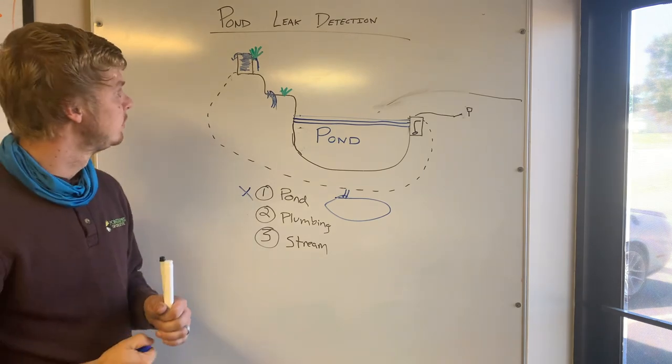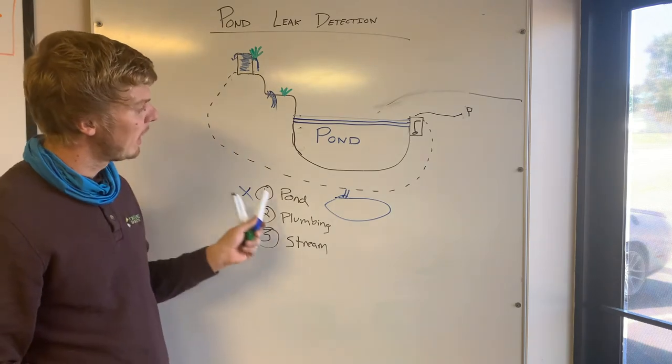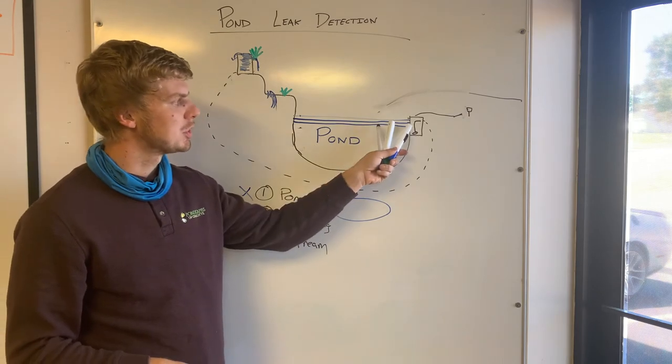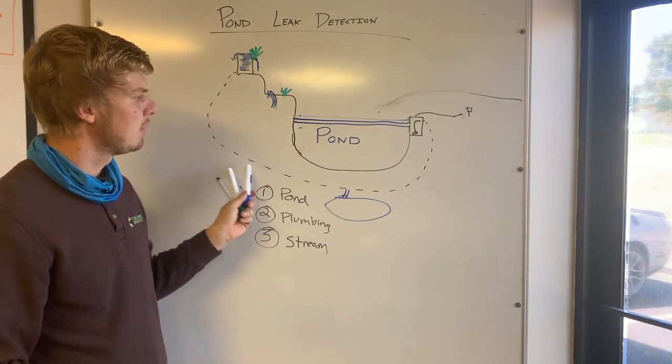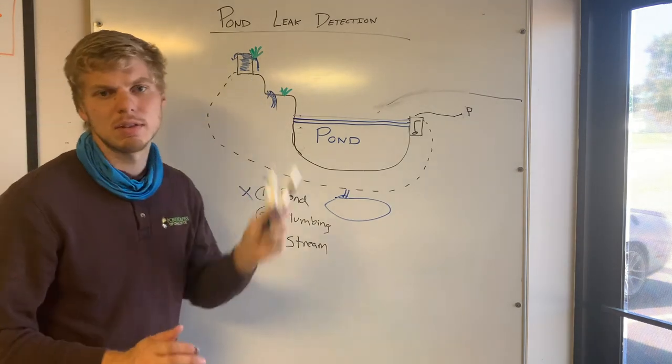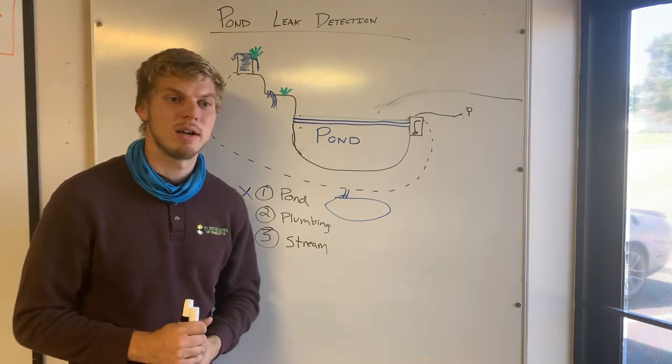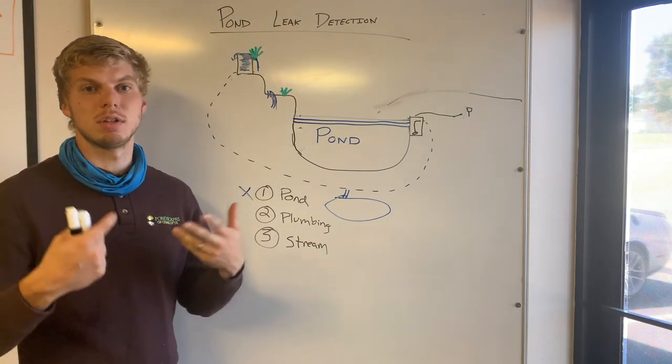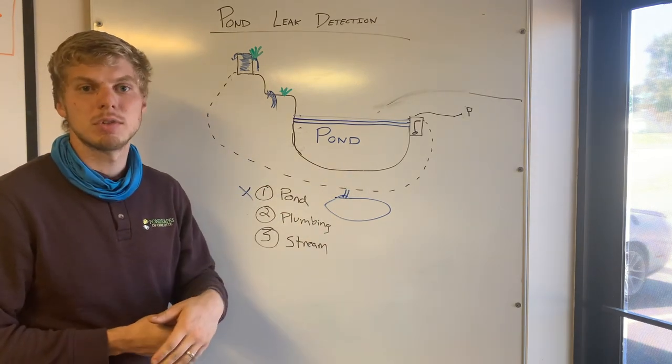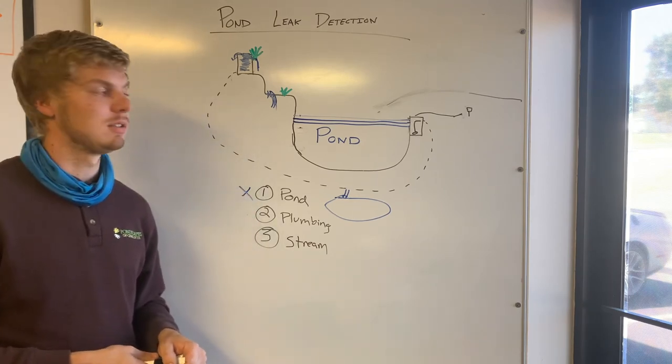Sometimes we come out to a pond and it's in really rough shape. They have problems with their skimmer bolts, they have rubber boots all along their plumbing and everything's overgrown and maybe it wasn't built correctly. And at that point, when we're out there our professionals are going to talk to you, show you all the problems or issues that are wrong with your pond and give a recommendation on what they think the best thing to do is next.